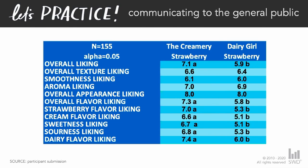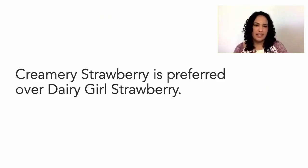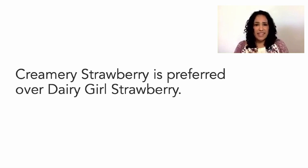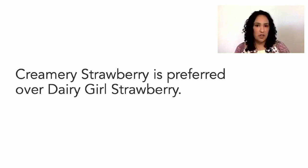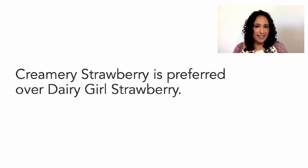This is going to be a little too technical, a little too much detail for such a general audience. So let's take a step back from the data, step back from the table or chart type, and just get really clear and concise on what's the simple message we want to communicate in its most basic form. If we put that into a sentence, it's simply that Creamery Strawberry is the preferred brand over Dairy Girl Strawberry.